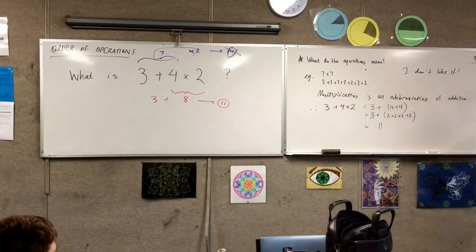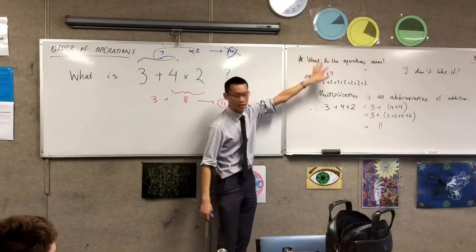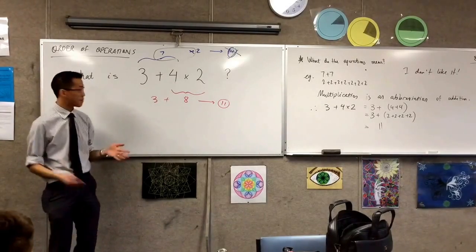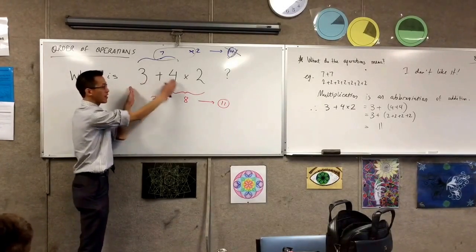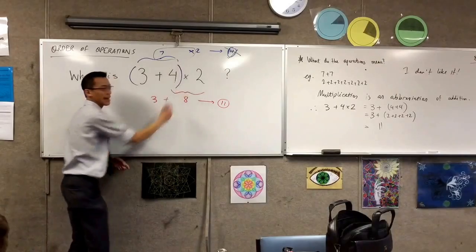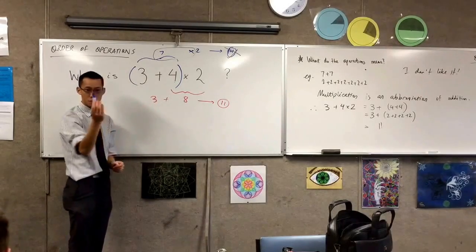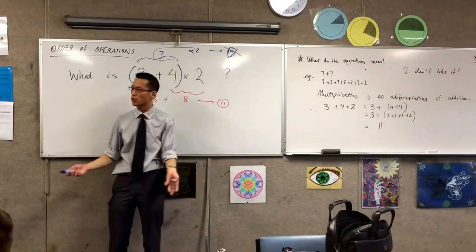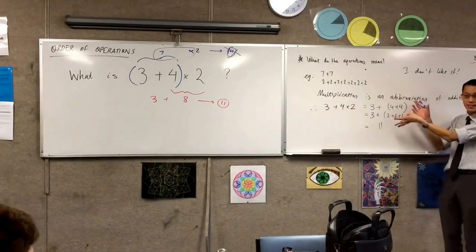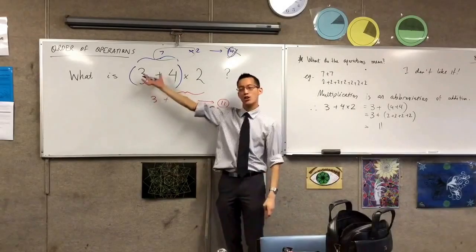Why do you put brackets around the four plus two? Brackets are the last really important piece of the operations thing. Suppose I actually did want to do the three and the four first — maybe I want to double a group of things. What could I do to the statement to say 'do these first'? Put brackets. Brackets mean: anything you see in brackets, you do that first. So putting brackets around three plus four means you do that first and get 14.